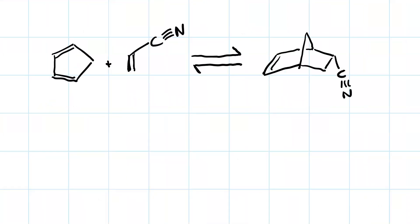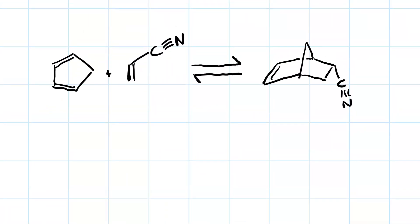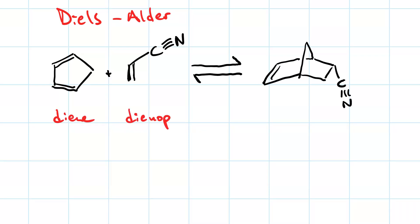Now consider this reaction — this is called a Diels-Alder cyclization reaction. We've got a diene and a dienophile. The curved arrows look like this: the pi bond acts as a nucleophile and attacks there, which exceeds the octet on this carbon. So this pi bond also acts as a nucleophile and attacks there, which exceeds the octet on this carbon. So this pi bond moves here, and you end up with this bicyclic compound.